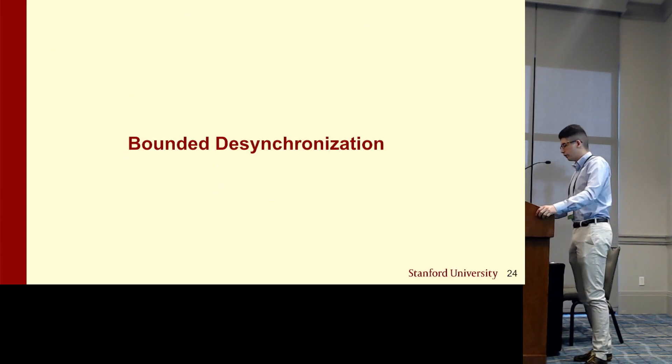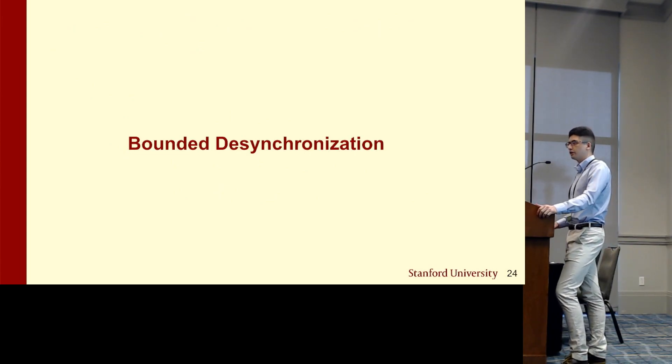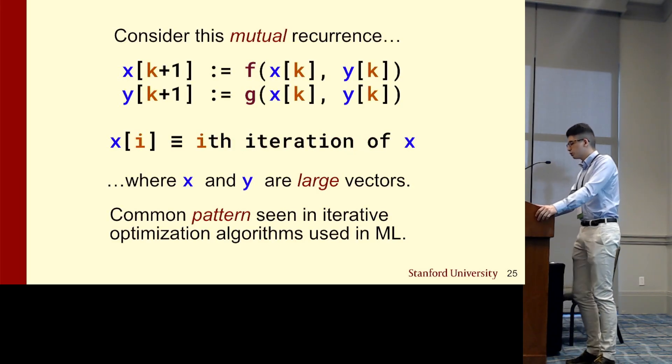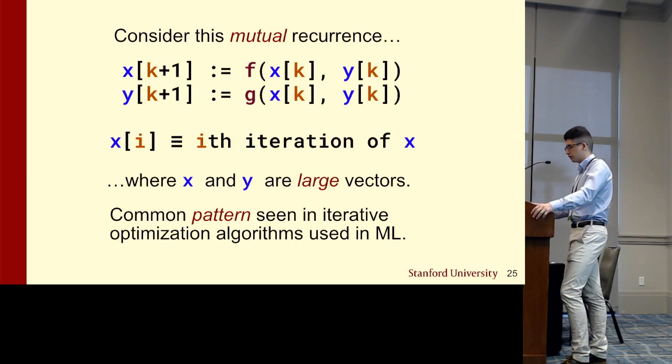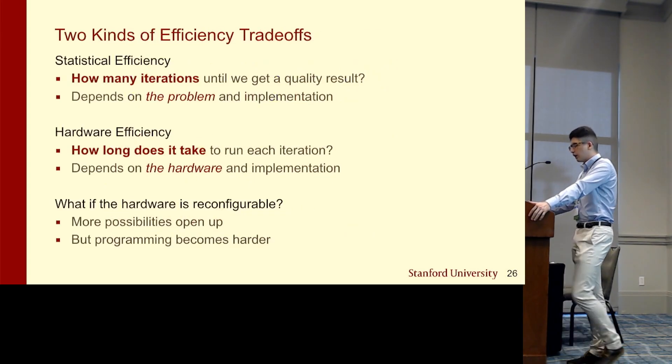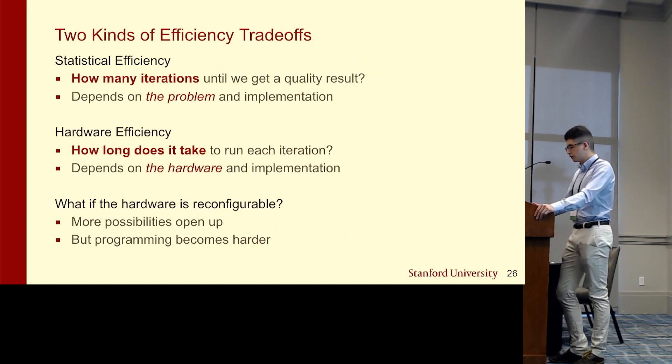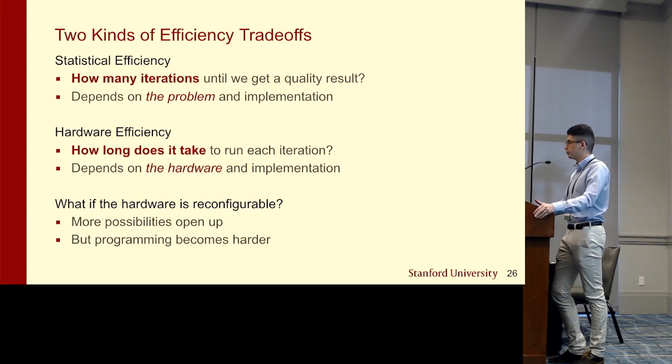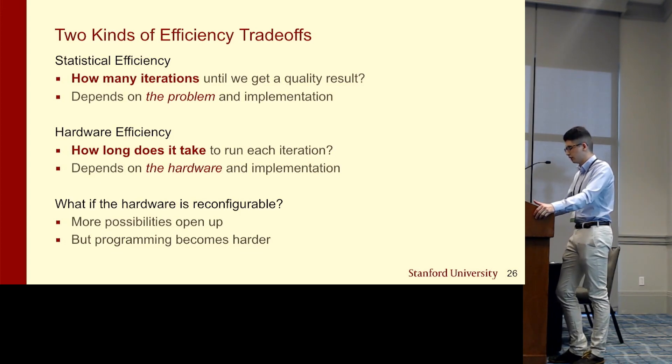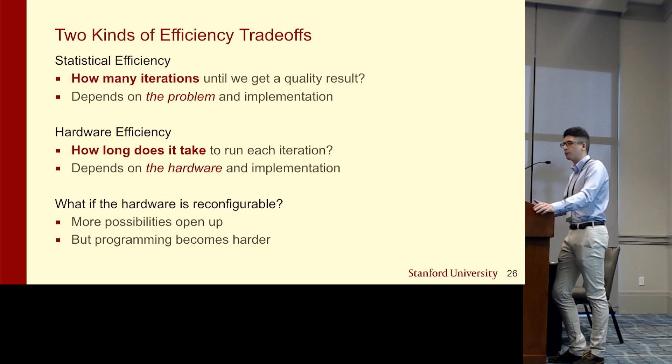Now we'll present the novel use case of tags, which is the notion of bounded desynchronization. Consider this mutual recurrence between two large vectors x and y, where subsequent iterations are computed based on their prior value. This is a common pattern seen in iterative algorithms widely used in machine learning. For algorithms like this, there are two kinds of efficiency. First, statistical efficiency tells you how many iterations you need until you reach convergence, which depends on the particular problem and its implementation. Second, hardware efficiency tells you how long it takes to run each iteration, which also depends on the hardware and the implementation.